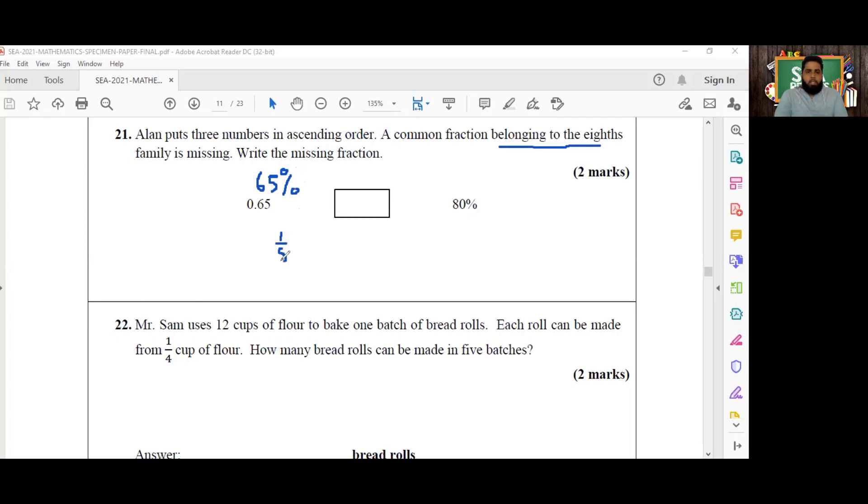We can immediately eliminate some of the fractions. For instance, one eighth, two eighths, all the way up to four eighths would be 50% or less because four eighths can be reduced to one half and we know that one half is 50%. So all of these are going to be less than 65%. So we won't bother to test those.